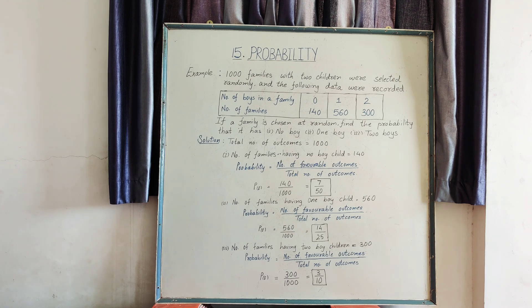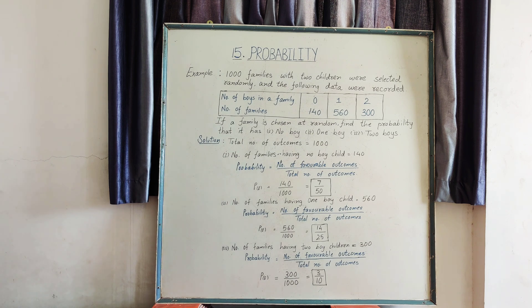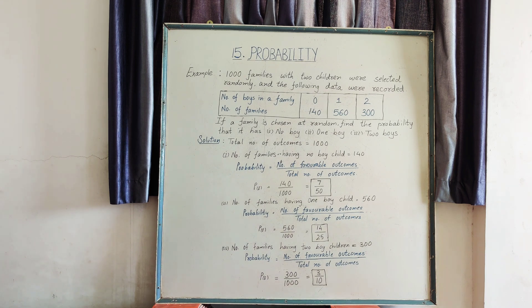Now let's look at some examples based on probability. The question is: 1000 families with two children were selected randomly and the following data were recorded. The number of boys in the family and the corresponding number of families are: 0 boys — 140 families, 1 boy — 560 families, and 2 boys — 300 families. If a family is chosen at random, find the probability that it has no boy, one boy, and two boys.